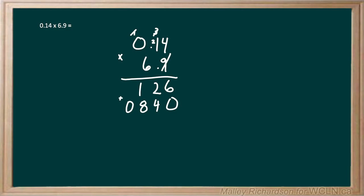Next we want to add up these two rows of digits down below. So we have 6 plus 0 gives us 6, 2 plus 4 gives us 6, 1 plus 8 gives us 9, and then nothing plus 0 gives us 0.